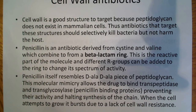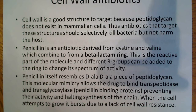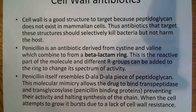Different R groups — functional groups — can be attached to the ring to change its spectrum of activity, potentially allowing it to work on different organisms. Penicillin itself resembles the D-ala-D-ala piece of peptidoglycan, and this molecular mimicry allows the drug to bind transpeptidase and transglycosylase, both called penicillin-binding proteins. The drug then binds these proteins and prevents their activity, halting the synthesis of the peptidoglycan chain. When the cell attempts to grow, it bursts due to a lack of cell wall resistance — without that resistance pushing back, it simply lyses.